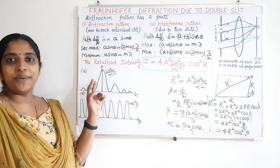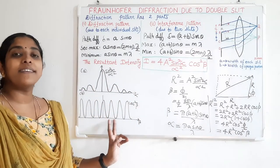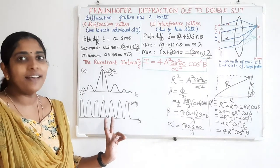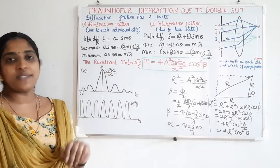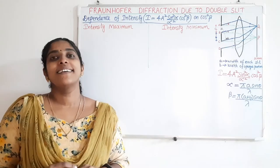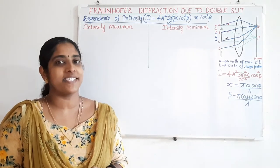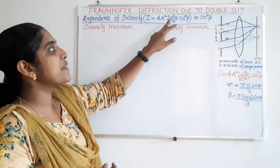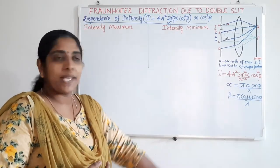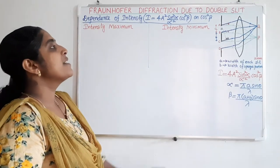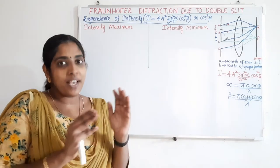This diagram you already know — it is the diffraction pattern due to a single slit, showing the variation of sin²(alpha) / alpha² with alpha. And this is the interference pattern due to the overlapping of wavelets from the two slits, showing the variation of cos²(beta).